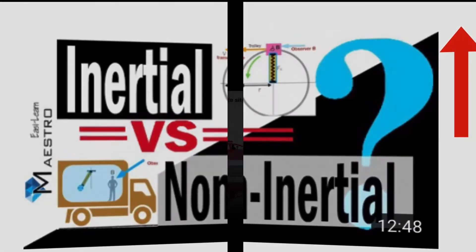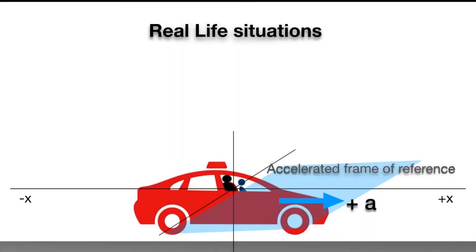Now let's consider some real life situations. Here a car is moving in positive x direction with an acceleration a. A reference frame is attached to the observer in the car and moving with the same acceleration.